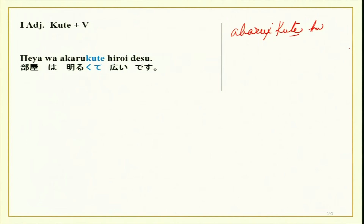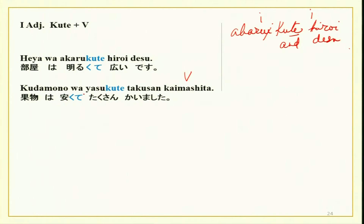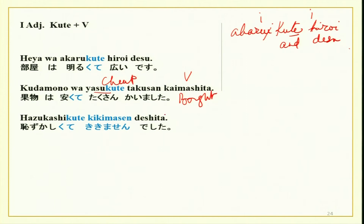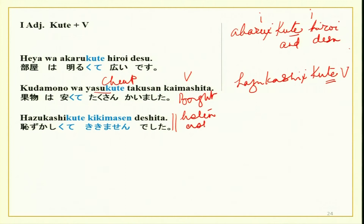Heya wa akarukute hiroi desu — the room is bright and very spacious. Akarui becomes akarukute, then hiroi desu — i-adjective plus i-adjective meaning 'and.' Kudamono wa yasukute takusan kaimashita — the fruit was very cheap, so I bought a lot. Hazukashikute kikimasen deshita — I was embarrassed and did not ask. Hazukashii: remove the ai, add kute, then use a verb. Kikimasu means both to listen and to ask.